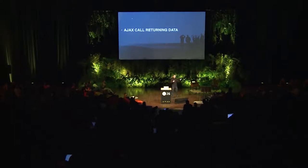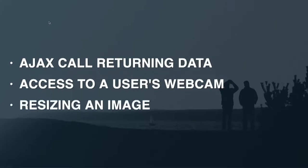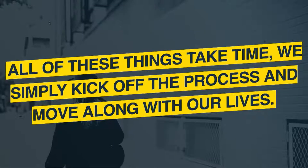Promises in JavaScript are sort of like an IOU for something that's going to happen at some point in the future. This could be an Ajax call returning data, accessing a user's webcam once they hit the allow button, or resizing an image. All of these things take time, and with promises we simply kick off the process and move along with our lives, only coming back when we need to deal with the data. That's because JavaScript waits for nobody — everything in JavaScript is asynchronous.